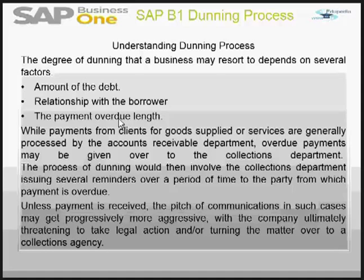While payments from clients for goods supplied or services are generally processed by the accounts receivable department, overdue payments may be handed over to the collections department. The dunning process then involves the collections department issuing several reminders over a period of time to the party from which payment is overdue.